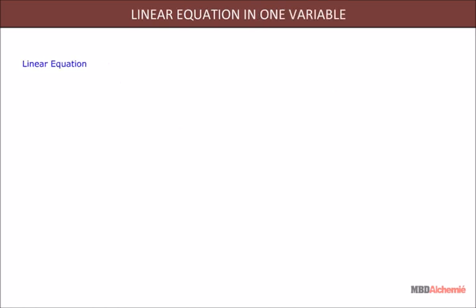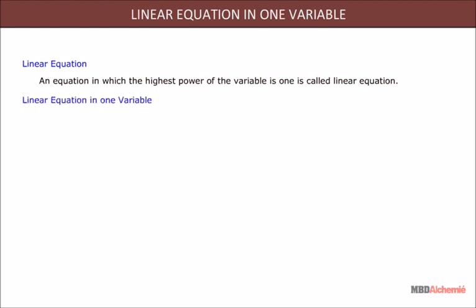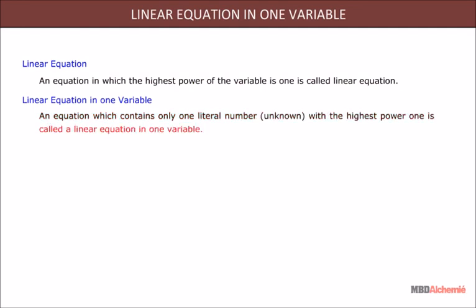An equation in which the highest power of the variable is 1 is called a linear equation. Linear equation in one variable: An equation which contains only one literal number, or unknown, with the highest power 1 is called a linear equation in one variable. For example, all the equations written below are equations in one variable, x.